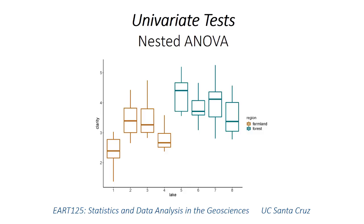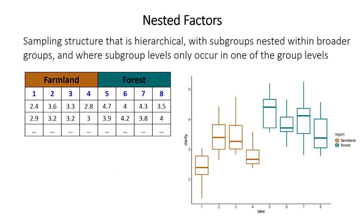This video builds on the previous one covering factorial ANOVA. Like that topic, nested ANOVA is a method for comparing a single variable between groups, but in this case those groups have subgroups nested within them. It's a hierarchical sampling structure with higher-level or broader groups and smaller subgroups nested within them. For example, the higher level group could be landscape type — farmland or forest — and the nested subgroups are individual lakes one through eight. Importantly, each lake occurs in only one of the broader group levels: lakes one through four occur in farmland, lakes five through eight occur only in forest.